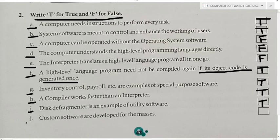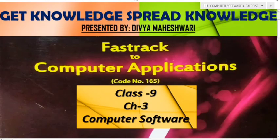Ninth True/False: Disk defragmenter is an example of utility software — answer is True. Last: Custom softwares are developed for the masses — answer is False. I hope students, this chapter is now clear to you. If you have any query, comment in the comment box. We will meet again in the next video with the next chapter. Bye bye!